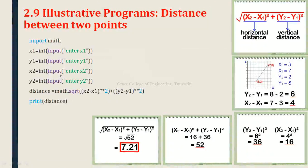In this video we are going to discuss GE8151 Problem Solving and Python Programming, second unit: Data Expressions and Statements. The last topic in second unit is 2.9 Illustrative Programs — distance between two points. The formula for distance between two points is the square root of (x2 minus x1) whole square plus (y2 minus y1) whole square.